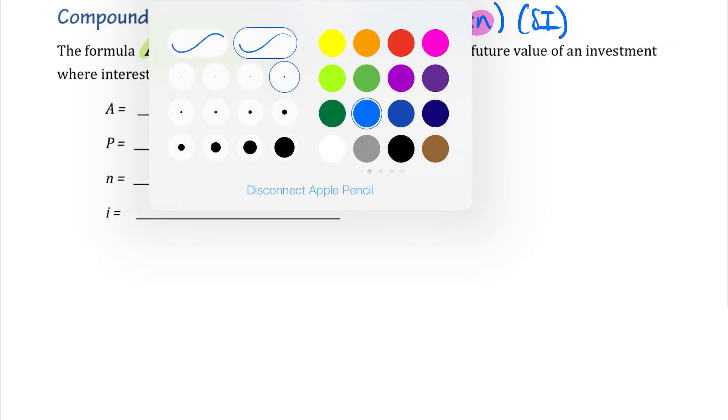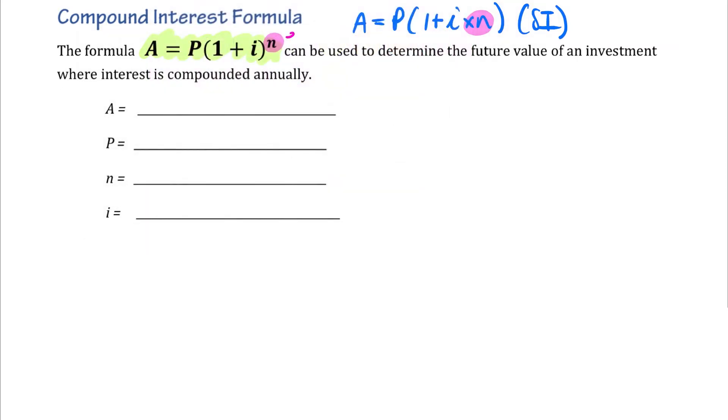If we notice in our compound interest formula, here, N is an exponent. We are raising that bracket to the exponent, or the power of the number of years.